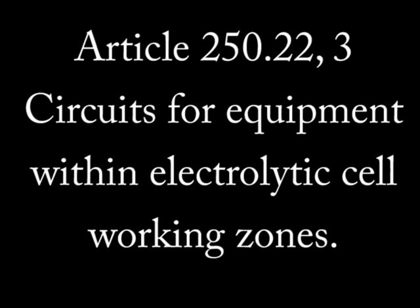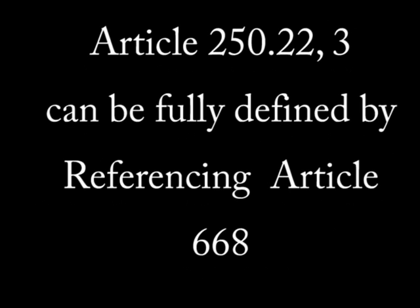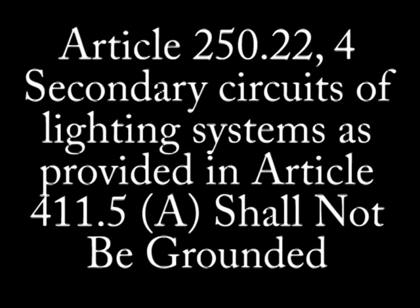Part 3: Circuits for equipment within electrolytic cell working areas shall not be grounded. Simply, factories that use electrolysis to make a variety of metals or produce hydrogen gas in the process are not to be grounded. A more exact definition can be found in Article 668.